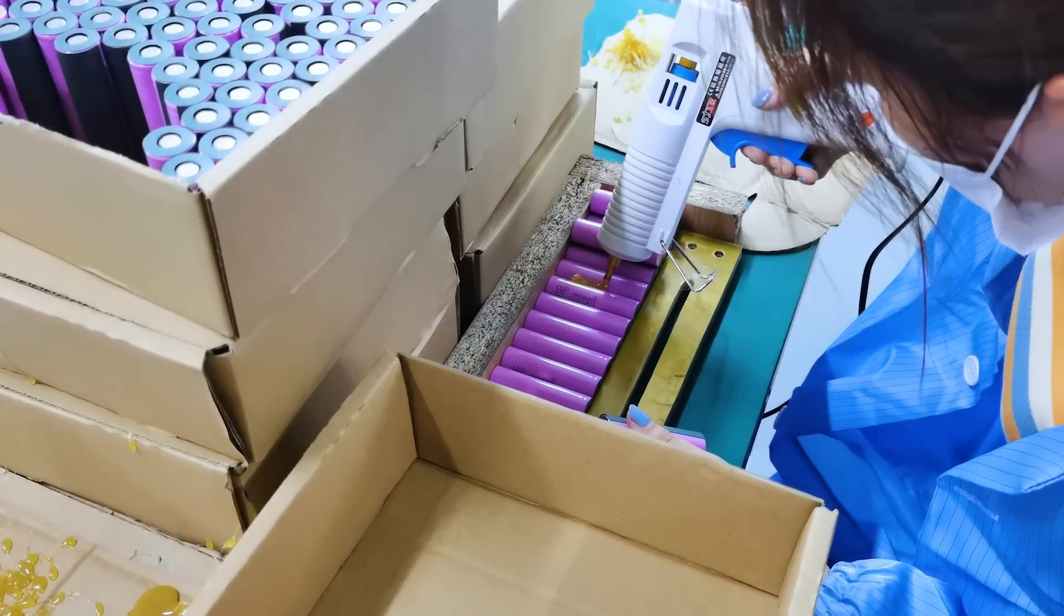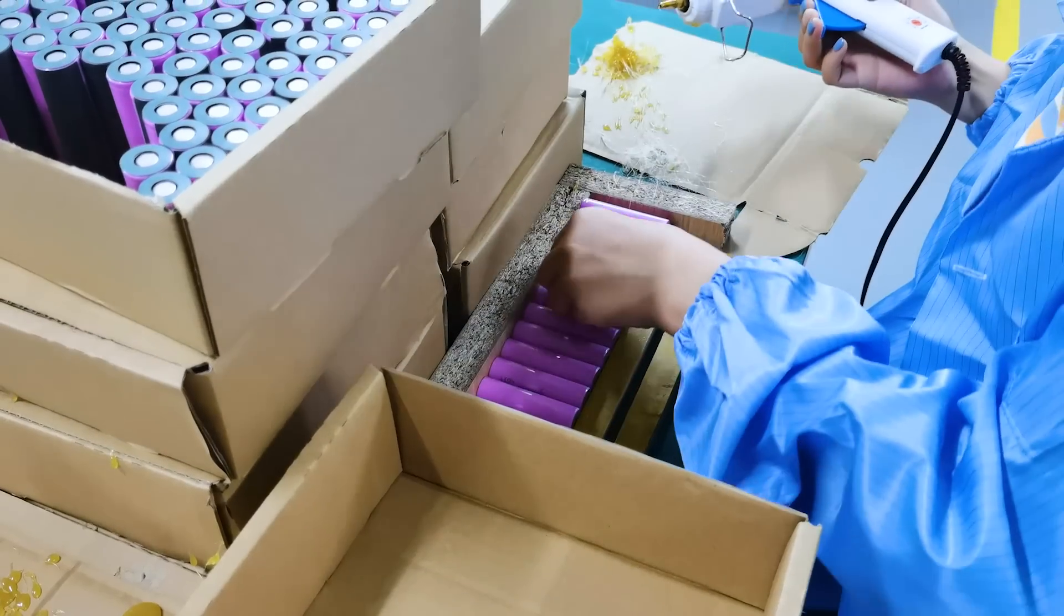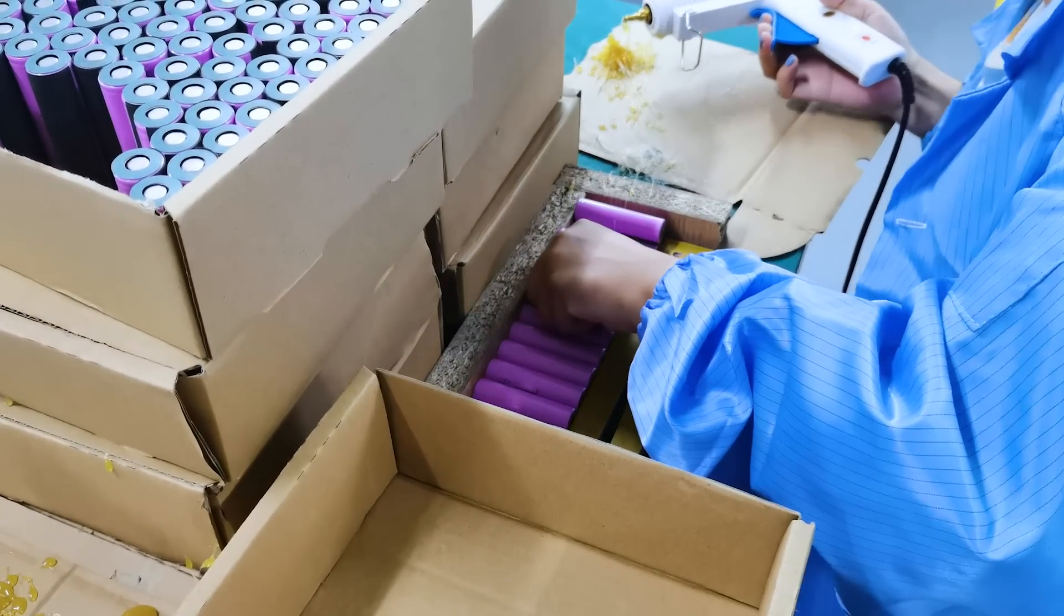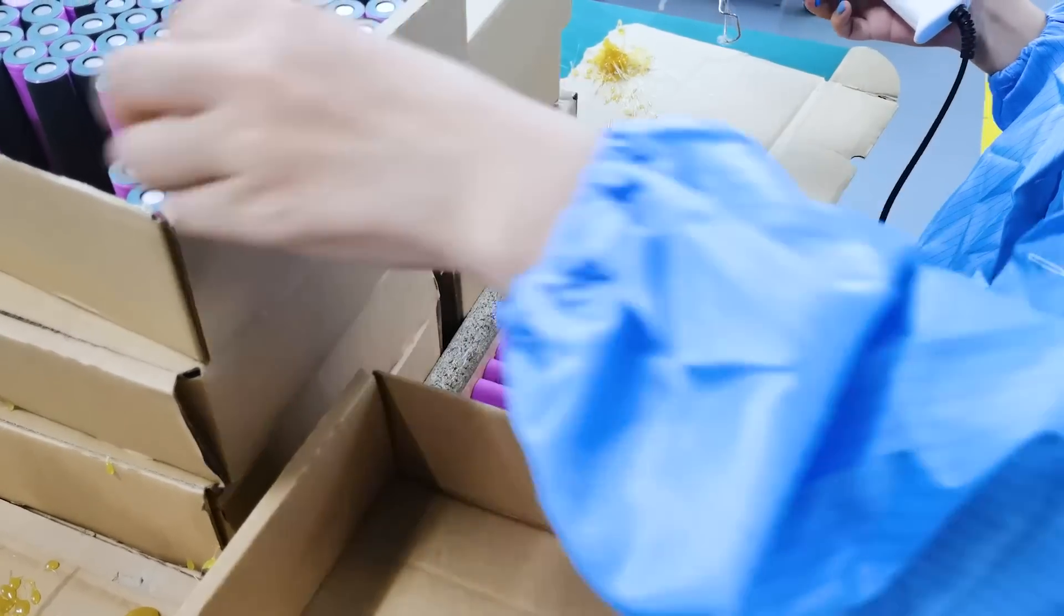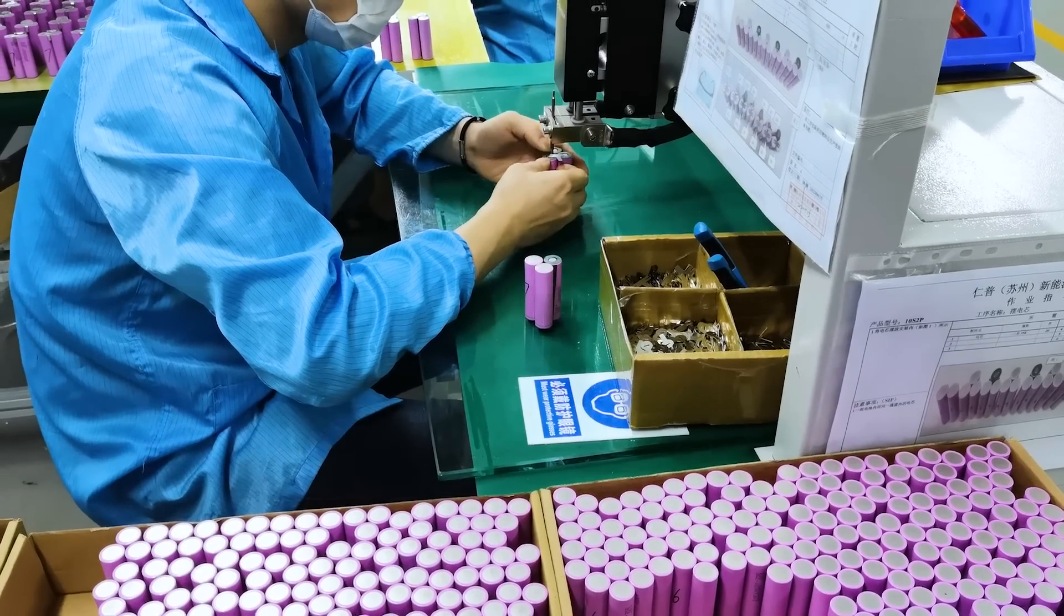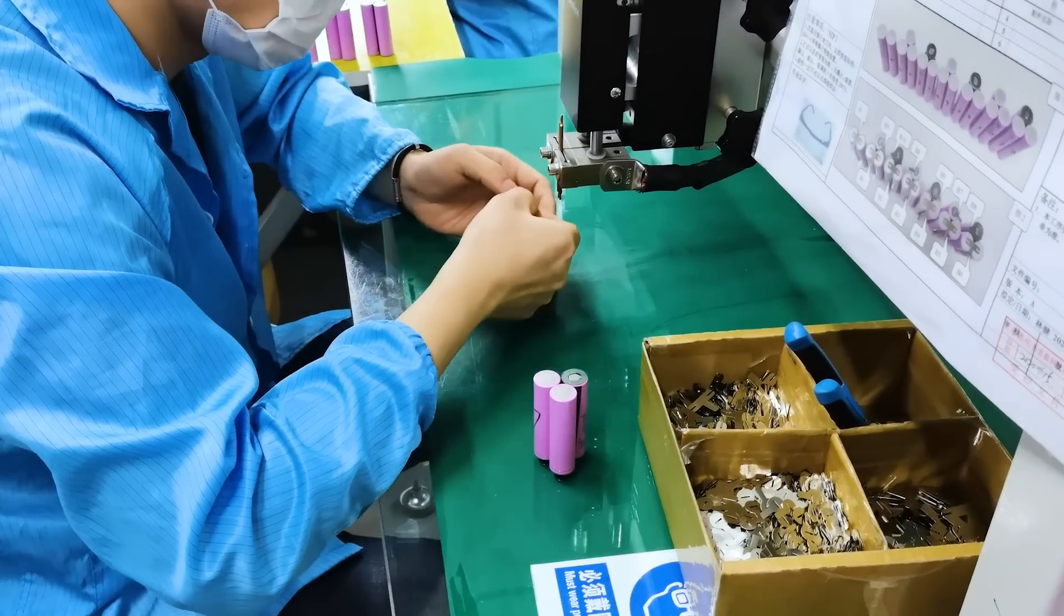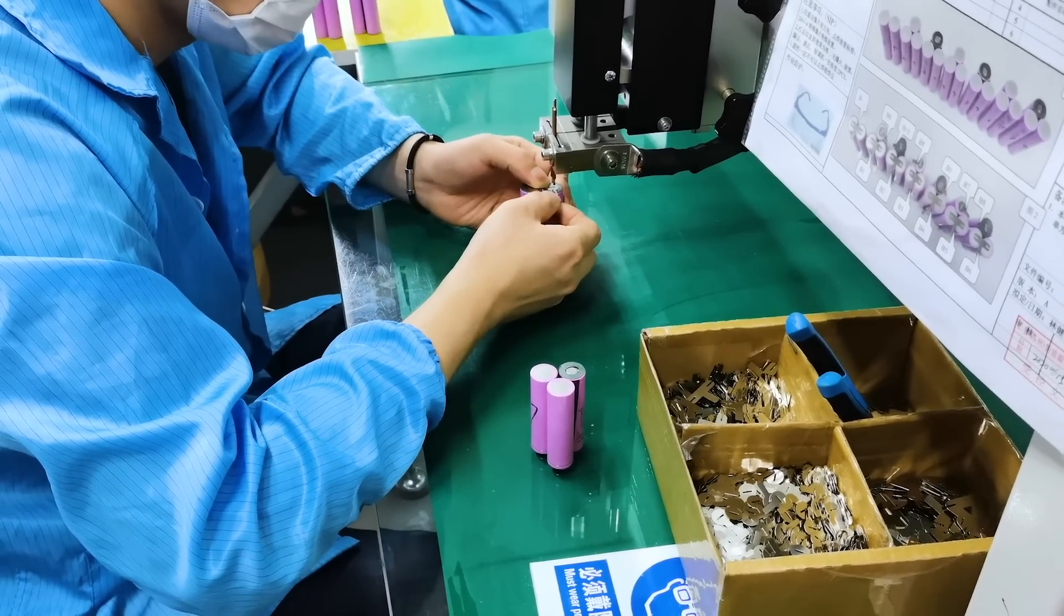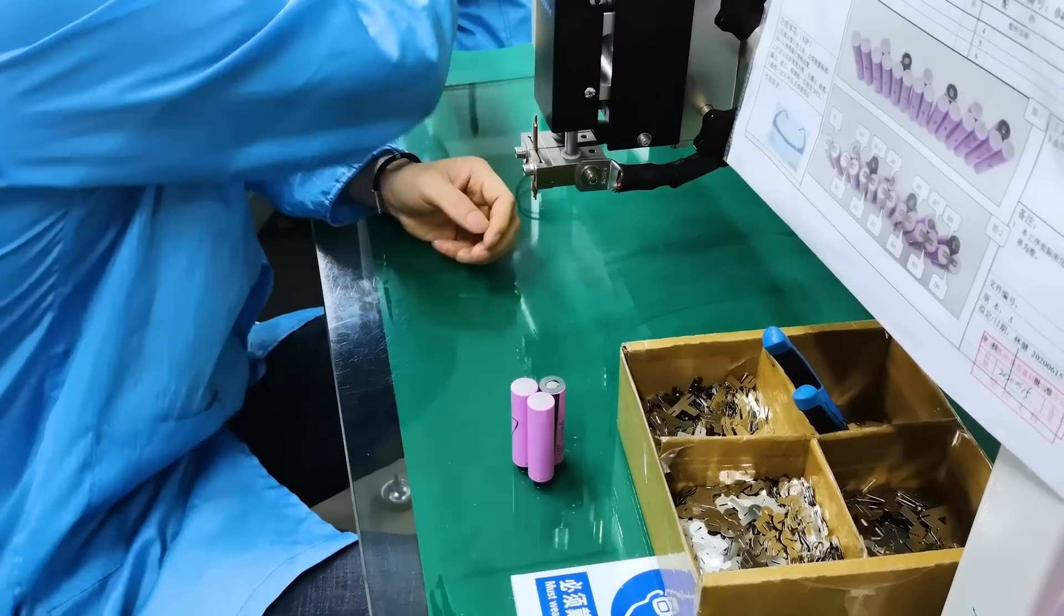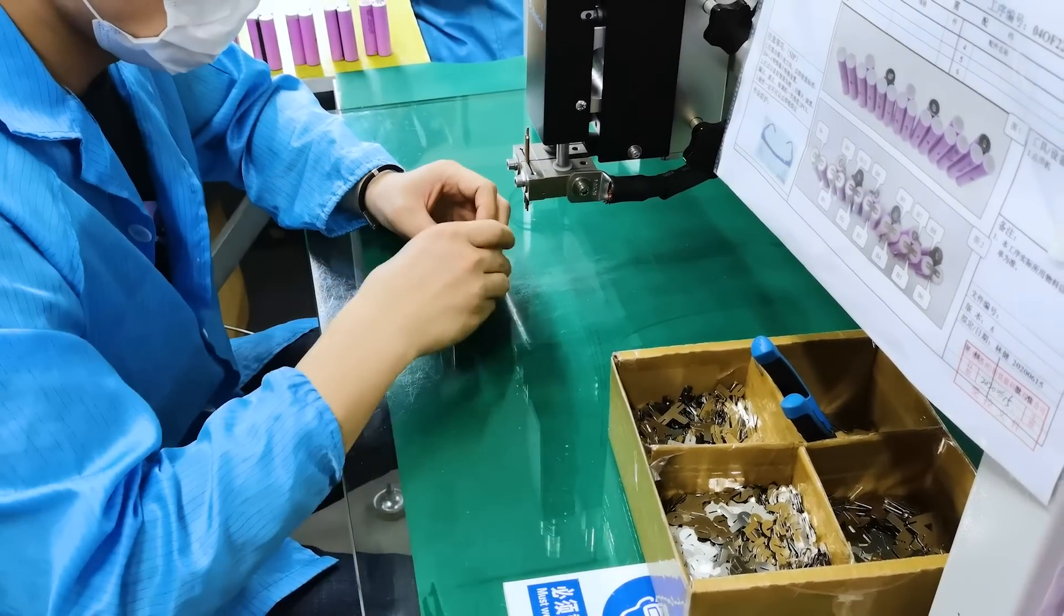You'll see we're using industrial adhesive here to build clusters of three that will later be stacked one on top of another. Next, the battery cells are taken in that cluster of three and we weld tabs on them.